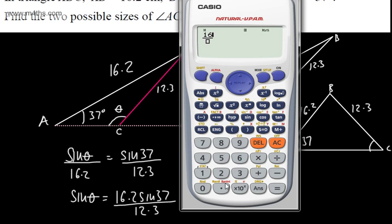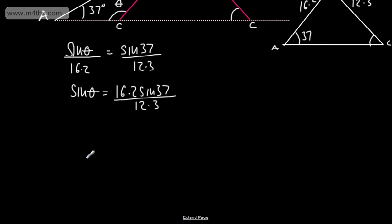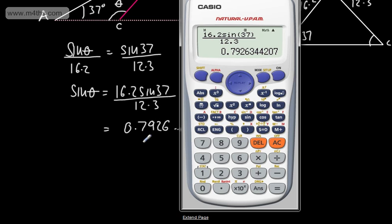If we find a value for sine of theta, 16.2 sine of 37 degrees—do check that you're in degrees mode—divided by 12.3 is going to give us a value for sine of theta. That gives us 0.7926, and so on and so forth. This is going to give us 0.7926.